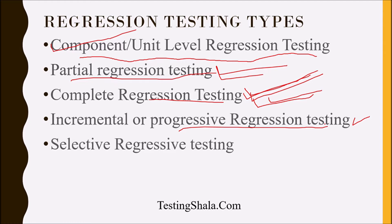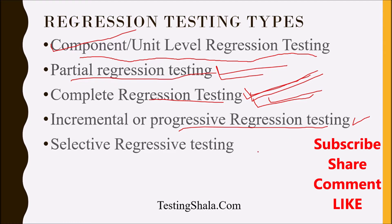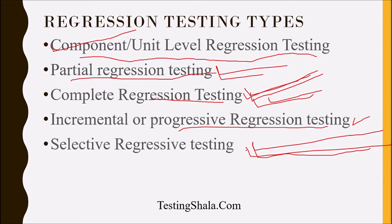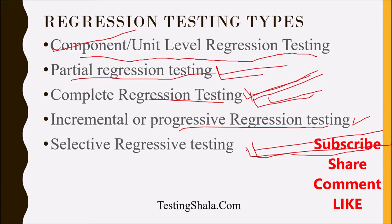The final type is selective regression testing. This is done when only certain functionalities are impacted — not across all functionality. We work with the development team to assess where the code was fixed and which surrounding areas need testing. We select only the impacted areas and business-critical functions to run, ensuring no core functionality breaks without running a full complete regression.